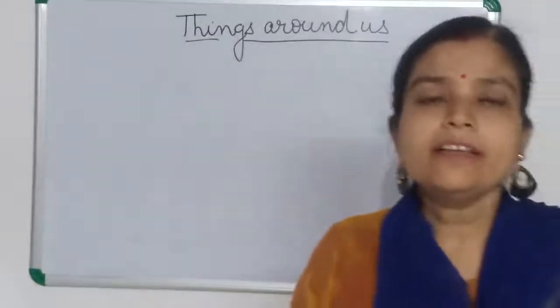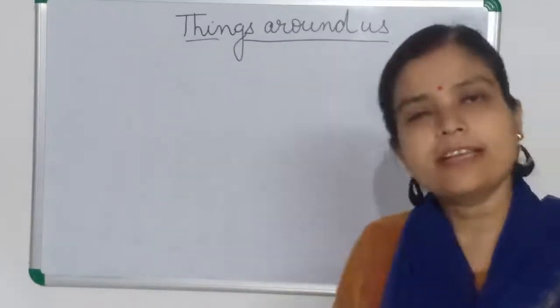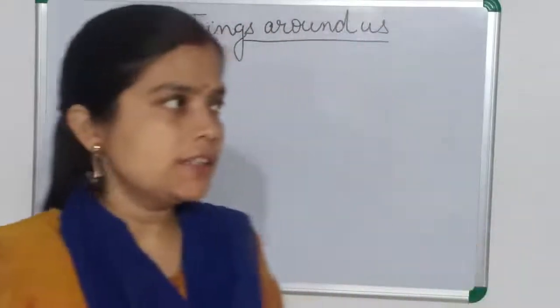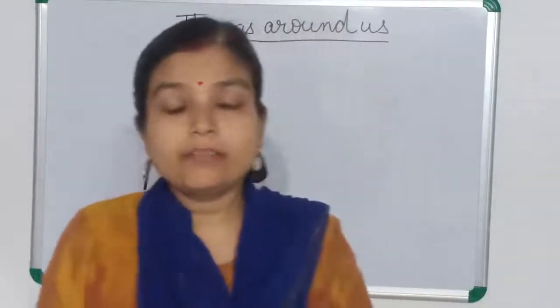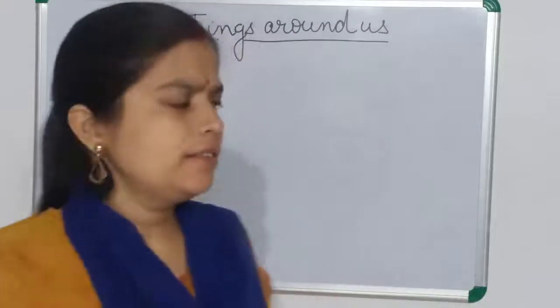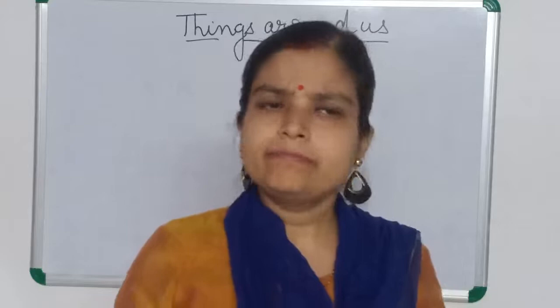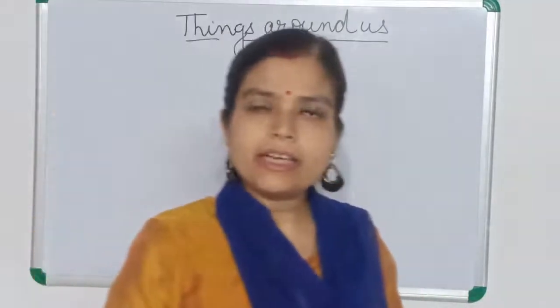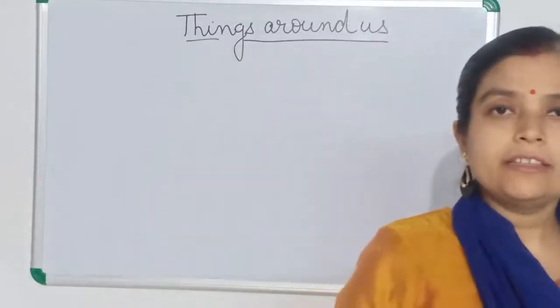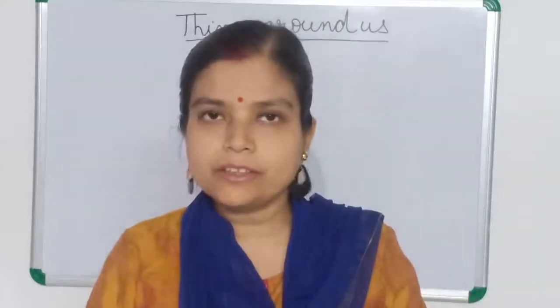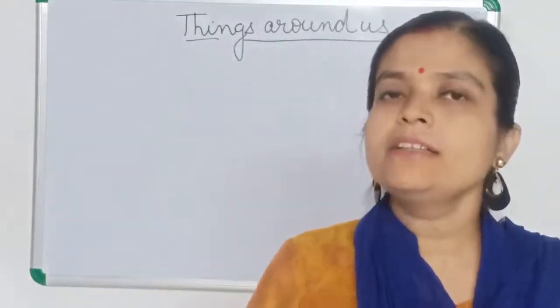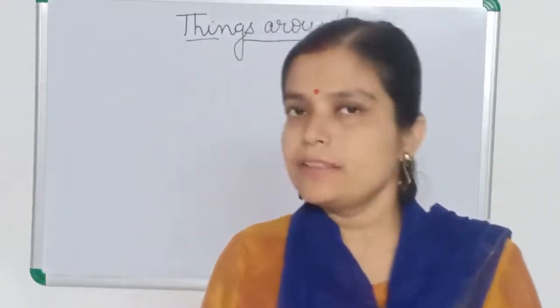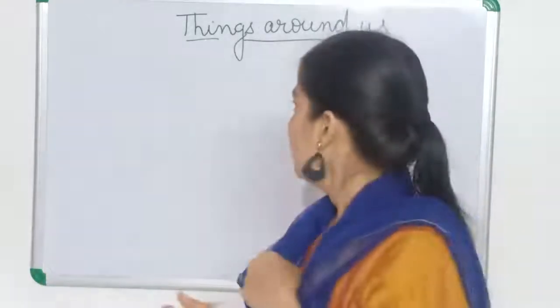Welcome to the class. Today let's have a quick recall of the chapter 'Things Around Us.' Things around us means things we can see around us. At home you see your mother, father, books, copy, pen, pencil — all these things. You can find some things are living and some things are not living. Your mother is working but your book is not moving by itself. Something is living around you and something is not living.